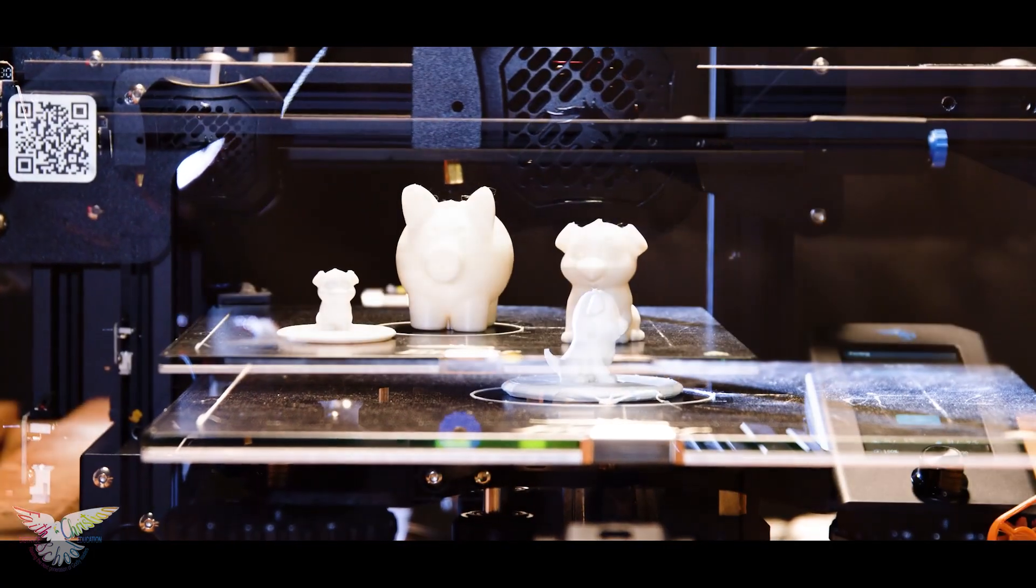So a 3D printer can print out all kinds of things with a plastic-like material. You can see here we printed out some cats, World War II tanks, vases.